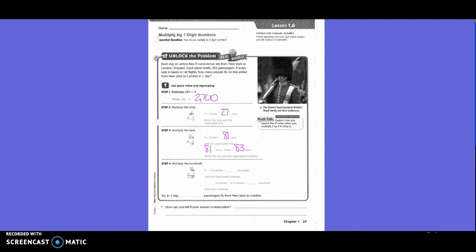Then we go down to the hundreds spot. They say 9 times 2 hundreds equals what? 1,800. And then they add the regrouped hundreds. So we had 1,800 plus 800 equals 2,600. So then on that one, since we have no more numbers to multiply, we can just go ahead and write 26, correct?